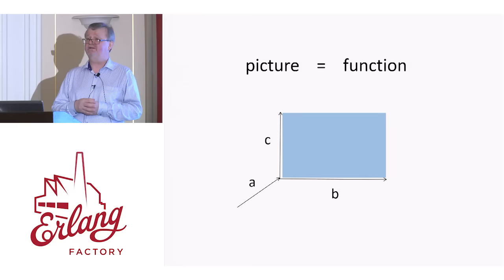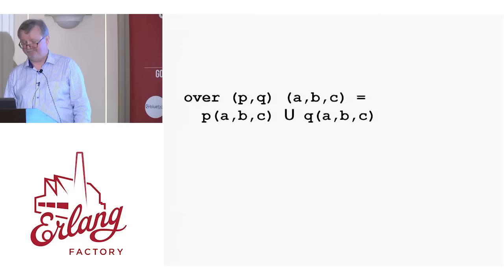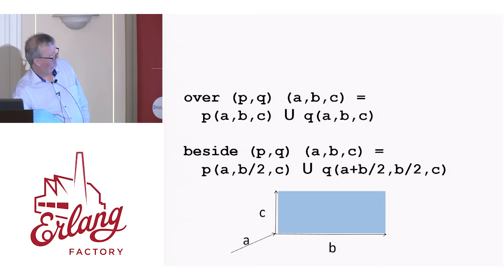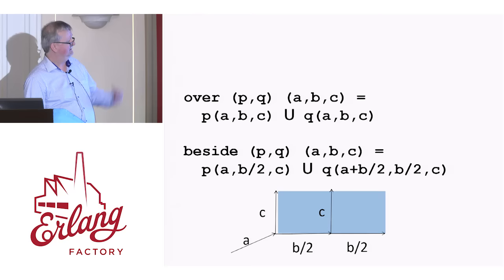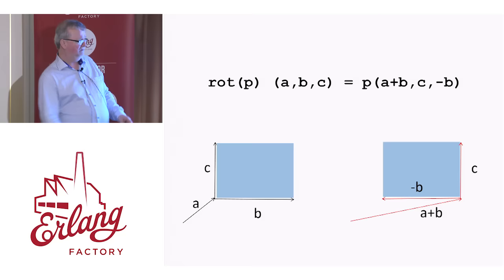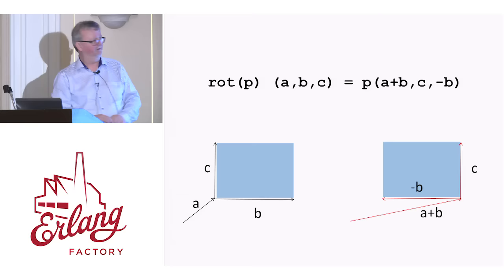For example, here's how you overlay P on Q: you take your three vectors A, B, and C, draw P in the box, draw Q in the box, and combine the drawing commands. Here's how you put P beside Q: if you were to draw P beside Q in a blue box, you split the box and draw P giving it B over 2, and draw Q starting from A plus B over 2. You give the vectors that correspond to the two halves of the box and draw each picture in the right place. You could even rotate pictures this way — if P would be drawn in this box, you give it the box on the right where you've moved the point of origin and give minus B. That's also very simple, and made these operations easy to define and easy to prove things about.